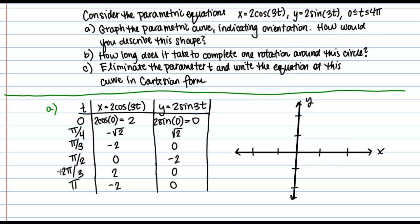So let's go ahead and plot these and try to get a sense of what's going on here. So at time equals 0, I'm at the point 2, 0, so here I am right here. And then at π equals 4, I'm at negative √2, √2. So √2 is about 1.4, so I am somewhere around here perhaps. And then at π over 3, I'm at the point negative 2, 0, so I'm here.